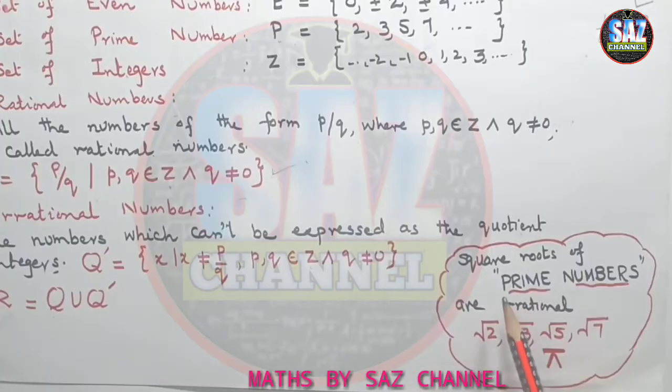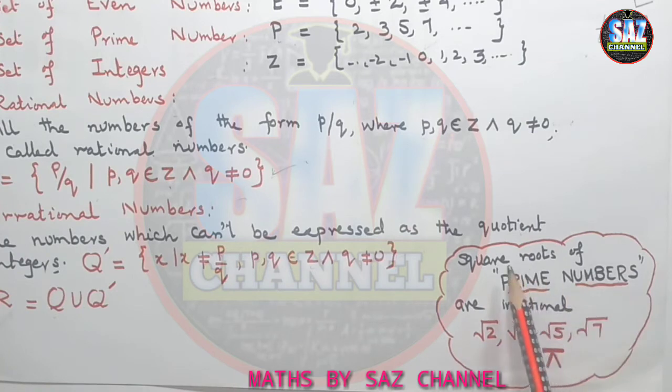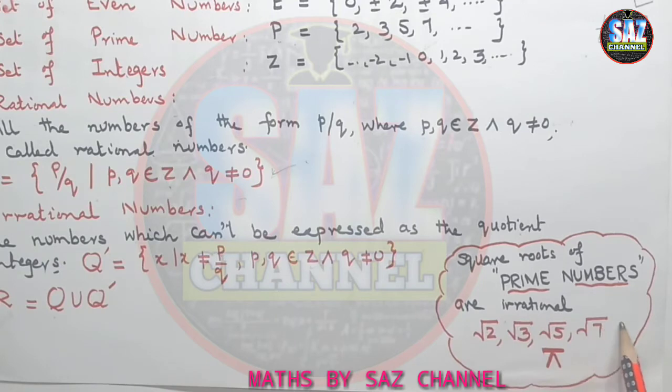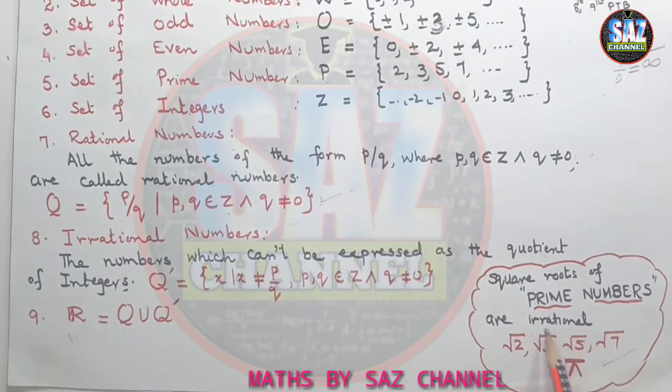Now there is some important term that we have to understand that whenever we take the square root of prime numbers, like square root of 2, square root of 3, square root of 5 and 7 or pi, square root of prime numbers are irrational numbers. But this is really important. This can be tested in P1 of CIE exams.